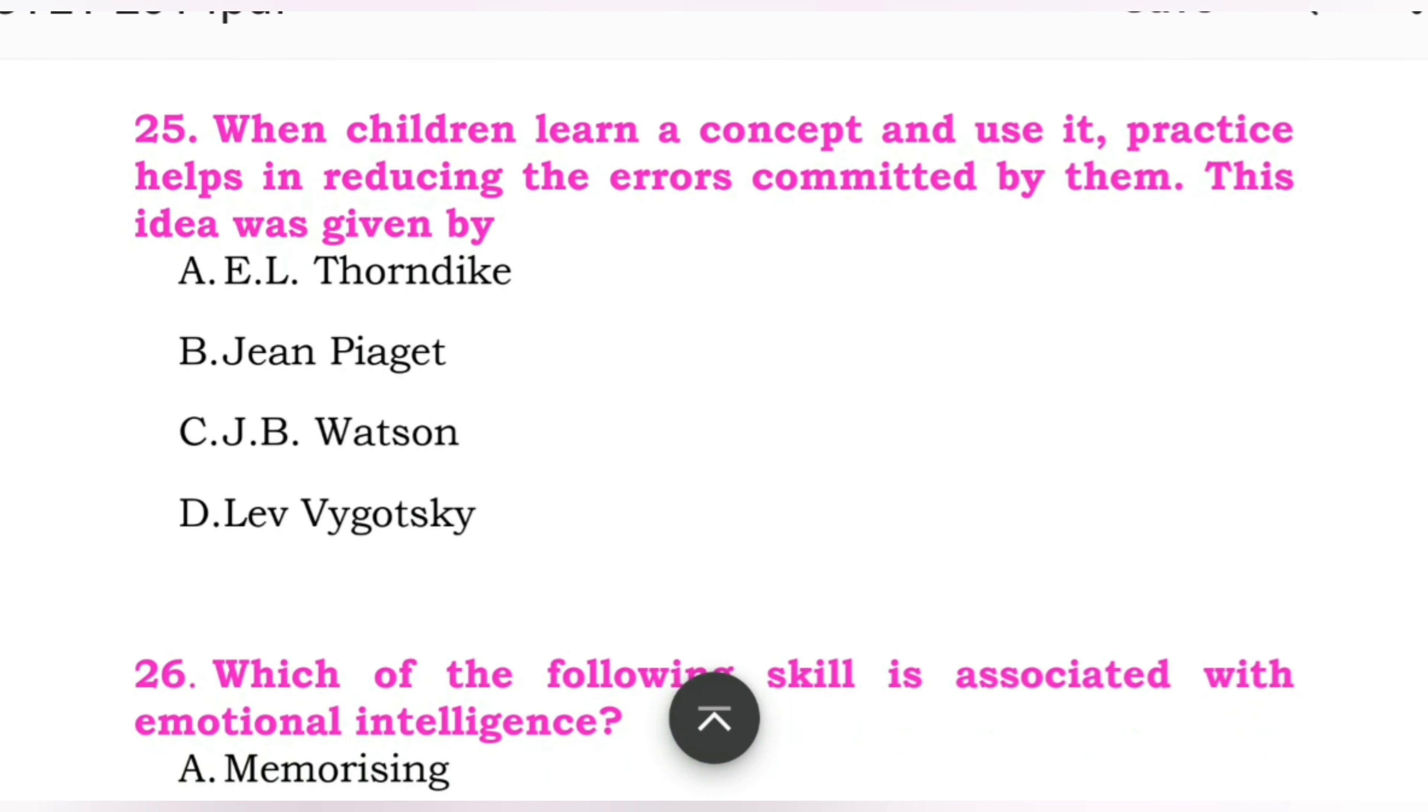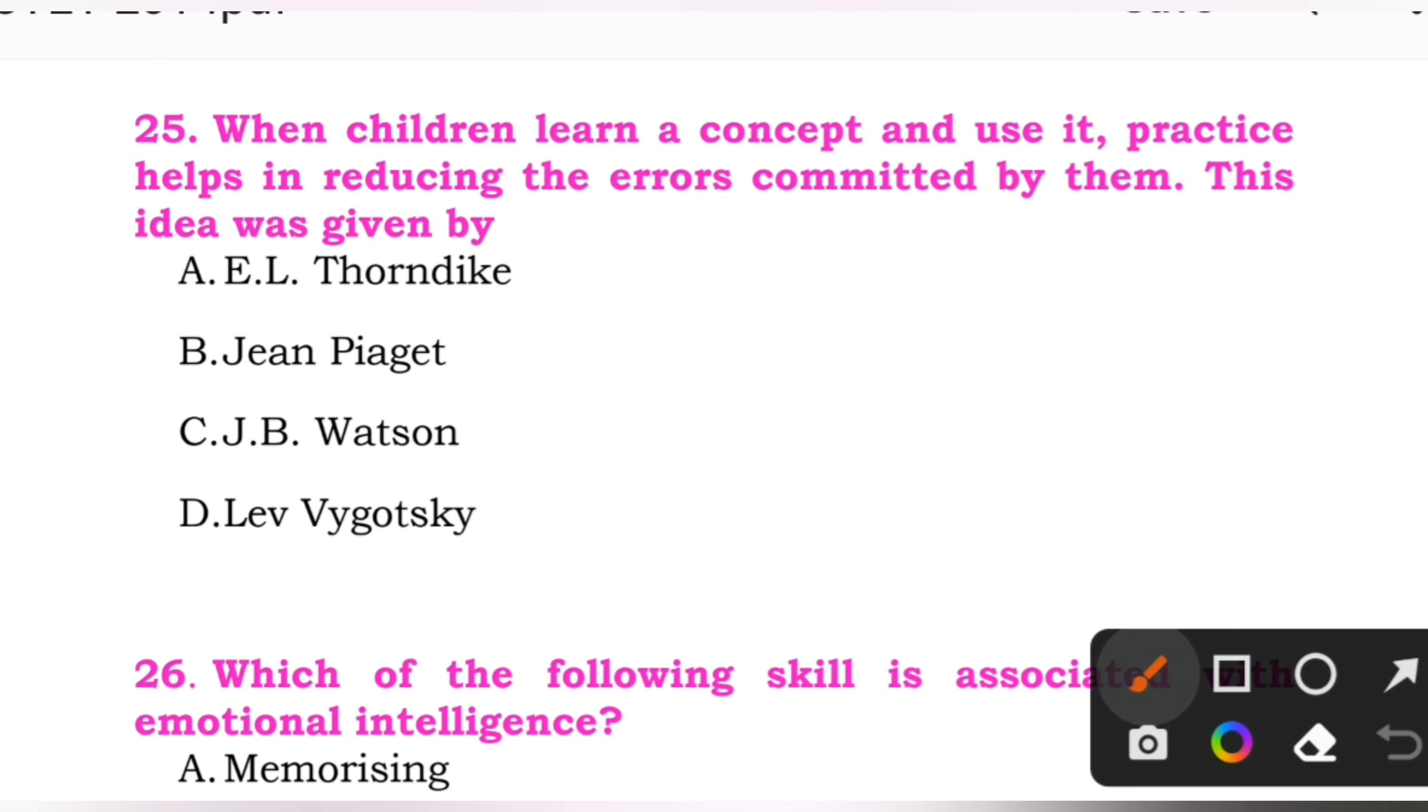Question number 25: When children learn a concept and use it, practice helps in reducing the errors committed by them. This idea was given by. Options: A: E. L. Thorndike. B: Jean Piaget. C: J. B. Watson. D: Leo Vygotsky. Here the right answer is A, E. L. Thorndike.